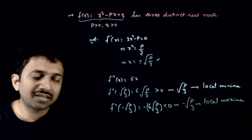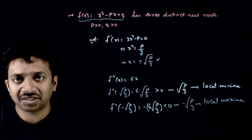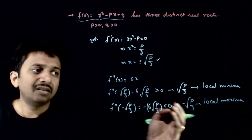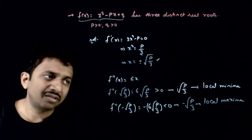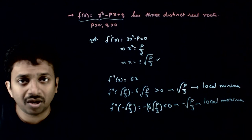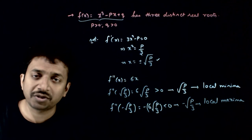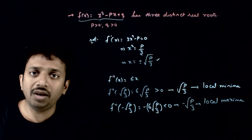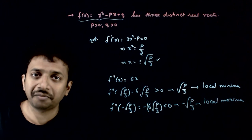So to summarize: minus root p by 3 corresponds to local maxima and plus root p by 3 corresponds to local minima. Thank you.